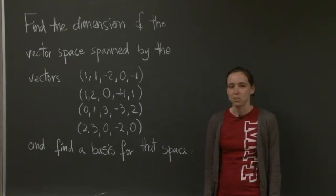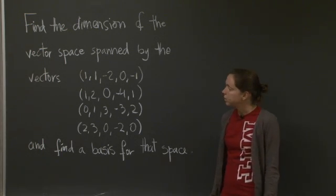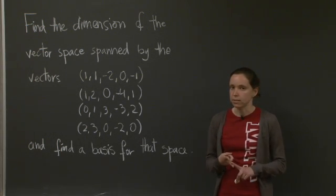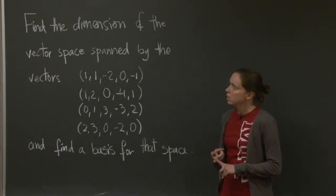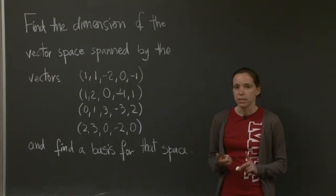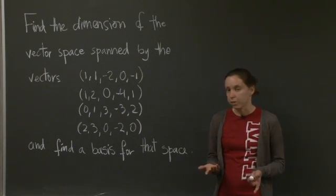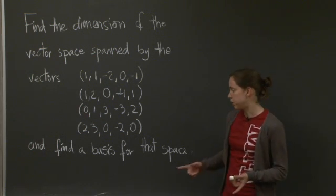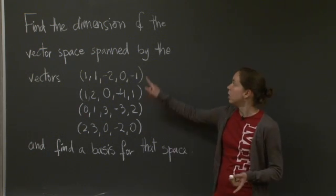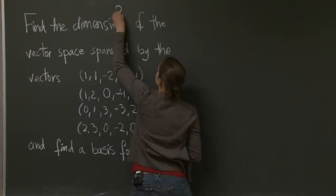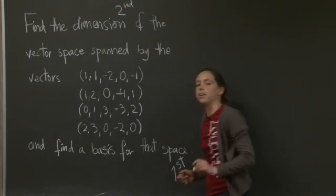All right. We're back. Let's work on it. Well, so we need to find the dimension and the basis. Remember what the dimension is? It's simply the number of vectors in a basis for the vector space. So actually, the problem is backwards. We want to find the basis for the space first, and then find the dimension. First here, and second here.